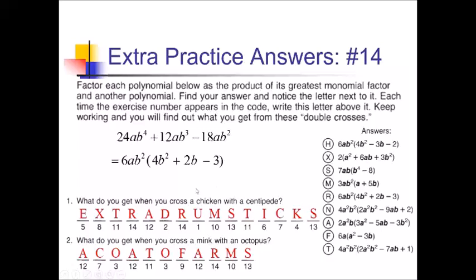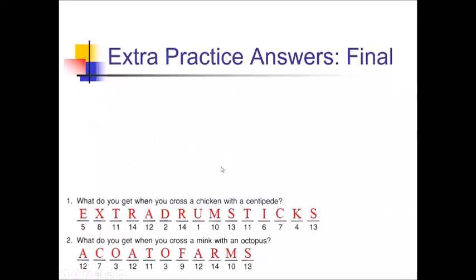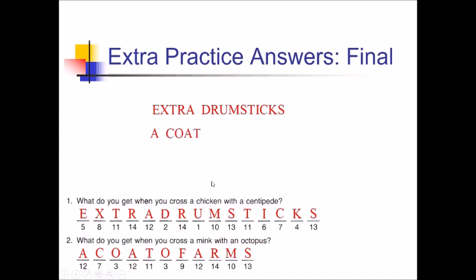Now let's go ahead and see if we can solve these riddles. For the first riddle — what do you get when you cross a chicken with a centipede? — the answer is: extra drumsticks. And going down to the next riddle — what do you get when you cross a mink with an octopus? — the answer is: a coat of arms. Because a mink coat, and then an octopus with all those arms. Anyway, there we go — Mr. Sutton signing off.